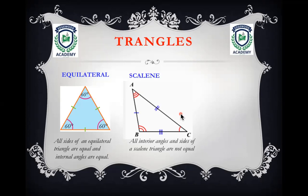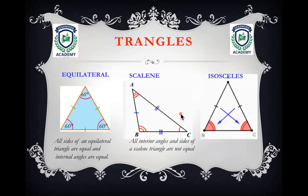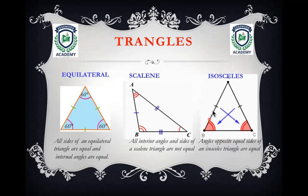An isosceles triangle has an important property: two sides of the triangle are equal. One interior angle is opposite one side, and the second interior angle is opposite the other equal side. Therefore, angles opposite equal sides of an isosceles triangle are equal.